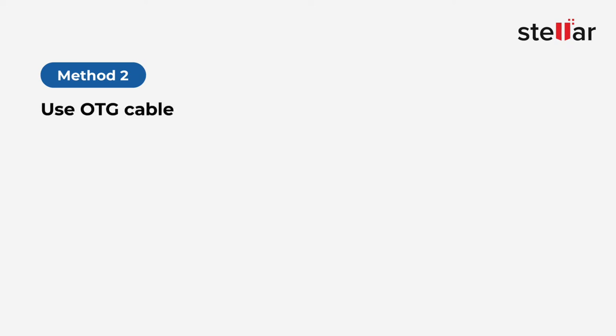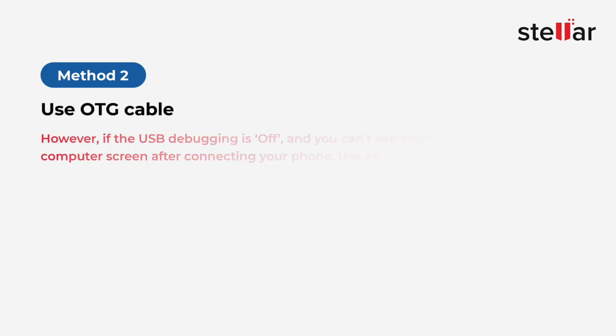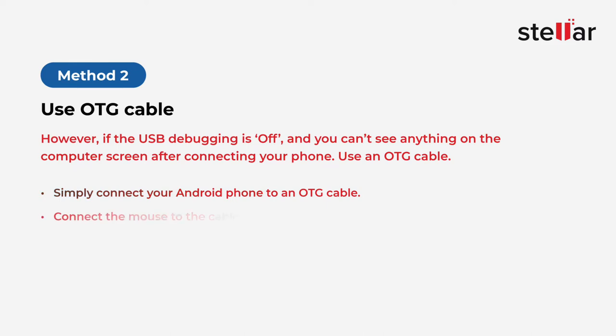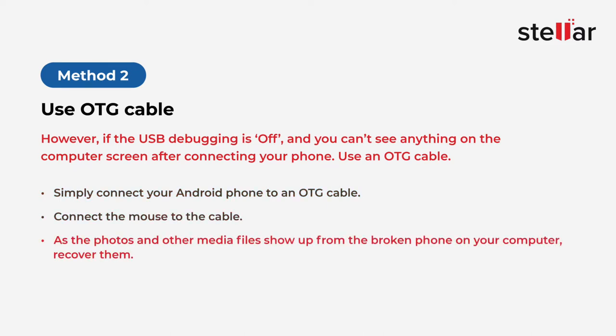Method 2: Use an OTG Cable. However, if the USB debugging is off and you can't see anything on the computer screen after connecting your phone, use an OTG cable. Simply connect your Android phone to an OTG cable, then connect the mouse to the cable. As the photos and other media files show up from the broken phone on your computer, recover them.